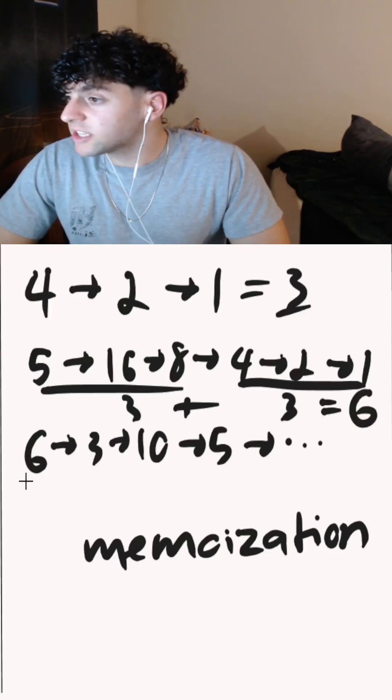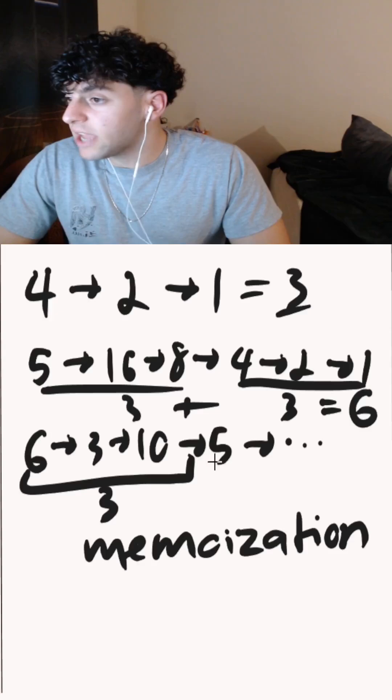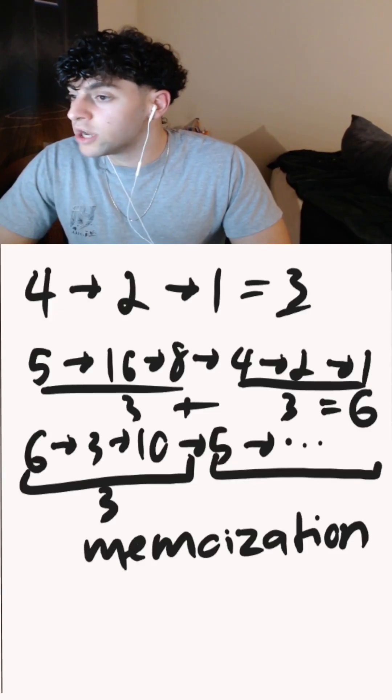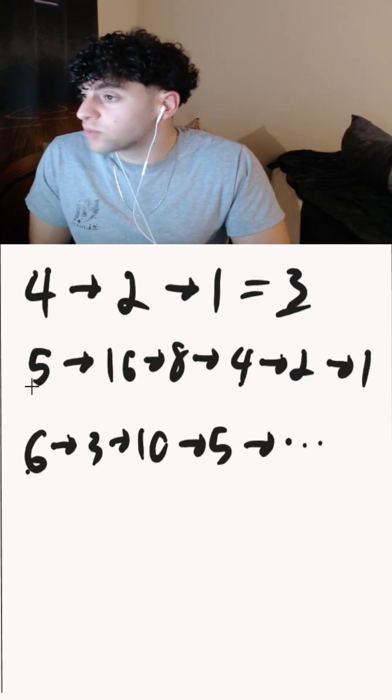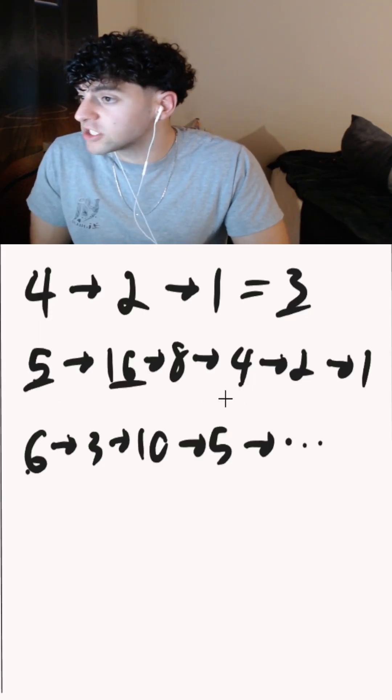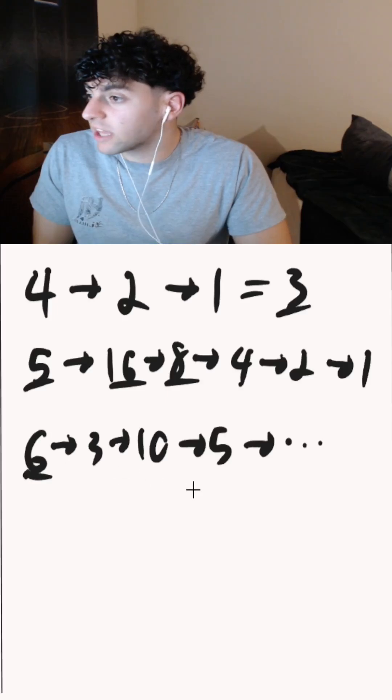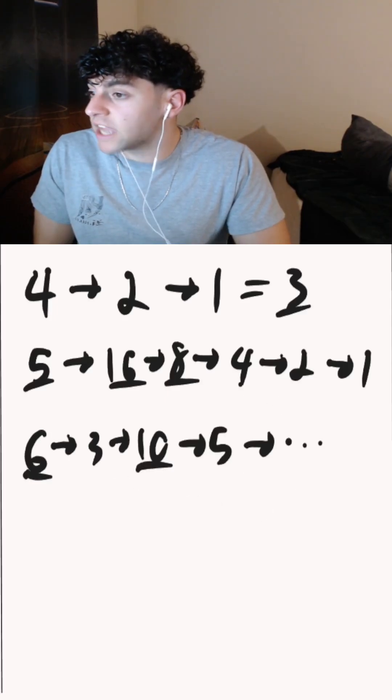Doing the same for 6, we get our current chain length to be 3. And when we get to the computation of 5, we know it to be 6. So we could do 3 plus 6, which is equal to 9. One more thing to note is when we're computing the chain length for 5, we're also computing it for 16 and 8. And when we're computing the length for 6, we're also computing the length for 10.